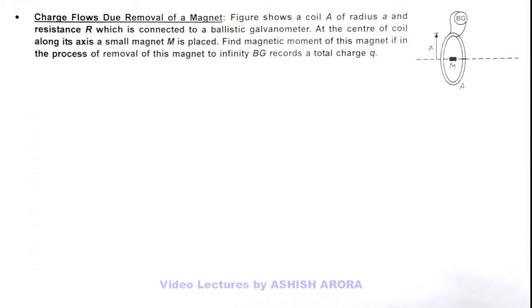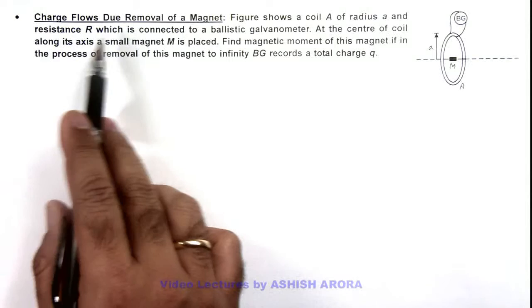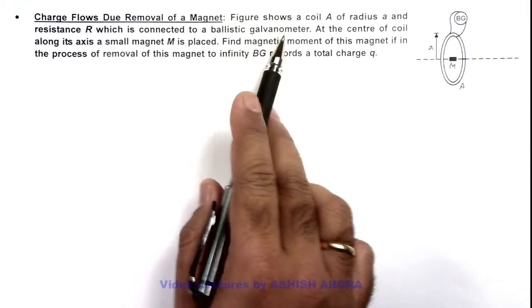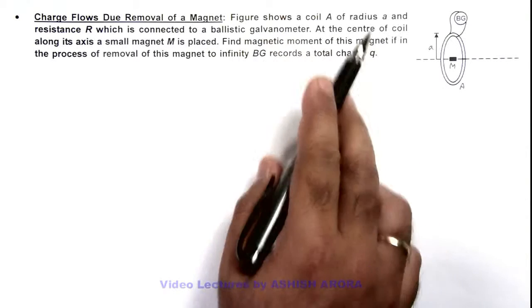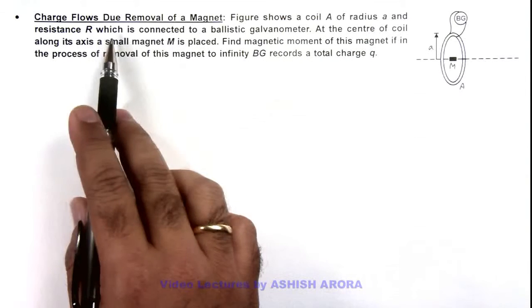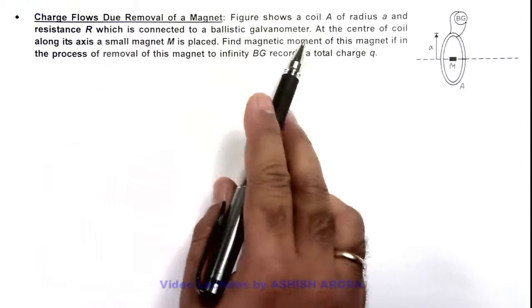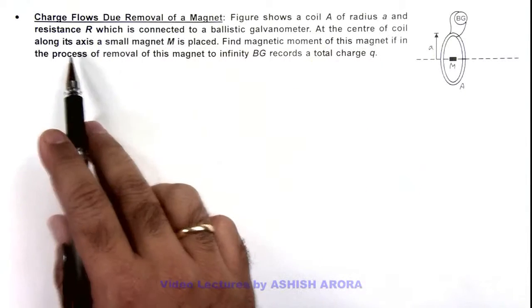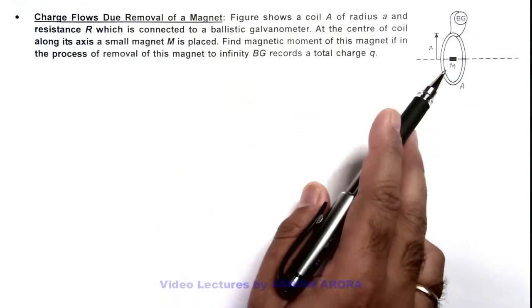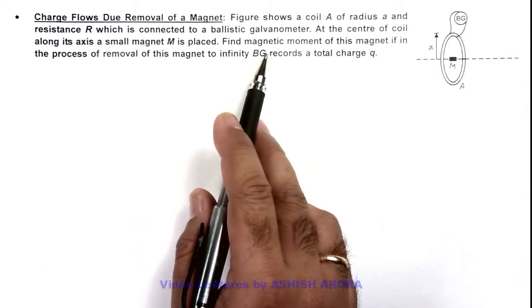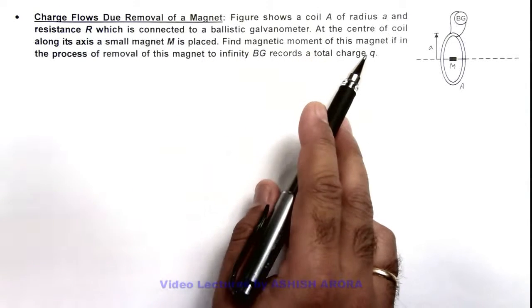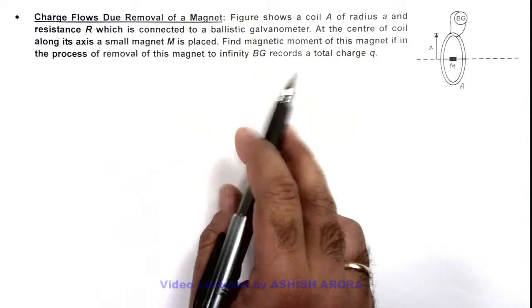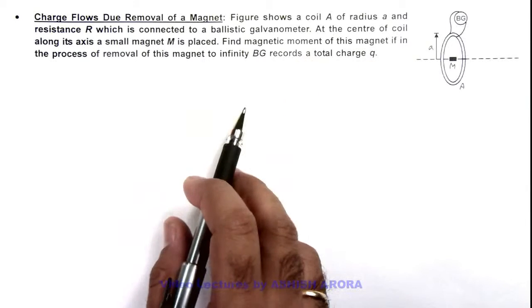In this illustration we'll study about the charge that flows due to removal of a magnet. The figure shows a coil of radius a and resistance r, which is connected to a ballistic galvanometer. At the center of the coil, along its axis, a small magnet m is placed, and we are required to find the magnetic moment of this magnet, given that in the process of removal of this magnet to infinity, the ballistic galvanometer records a total charge q.